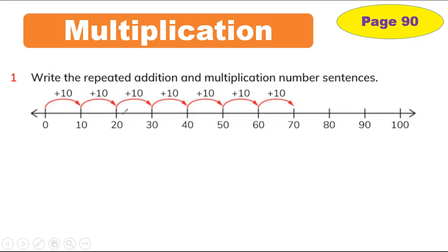How do we get 10? First you have to add 10 to 0 — 0 plus 10 gives us 10. How do we get 20? You have to add 10 again: 10 plus 10 is 20. And 20 plus 10 is 30, 30 plus 10 is 40, 40 plus 10 is 50. You have to add 10 each time.